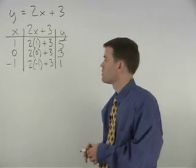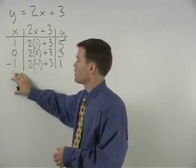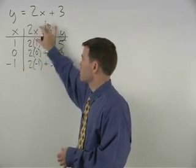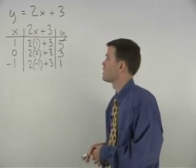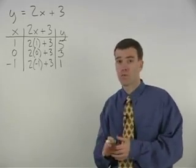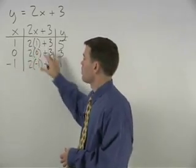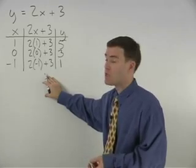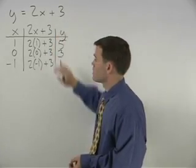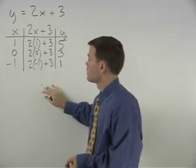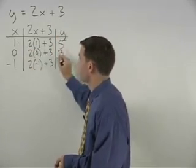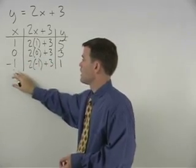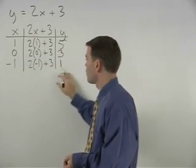I would always choose at least 3 values to plug into the equation for x. Notice that we now have 3 points that we can use to graph this equation. Our points are (1, 5), (0, 3), and (negative 1, 1).